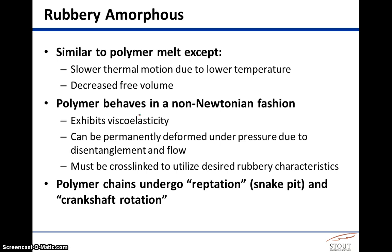The rubbery amorphous phase is kind of an in-between phase because it has some similarities to the melt, a completely molten phase. It's similar in the type of movement that those polymer chains are able to undergo; however, the movement is slower due to a lower temperature. The lower average kinetic energy manifests itself in a lower degree of agitation and movement, but still a substantial degree of movement — just not quite as high as it is in the melt.